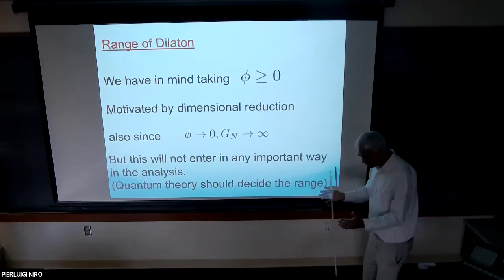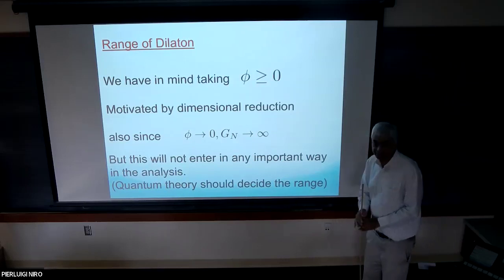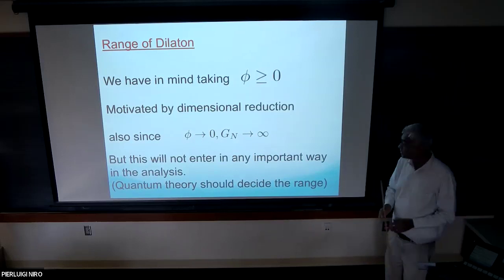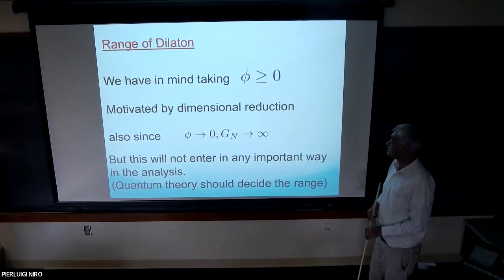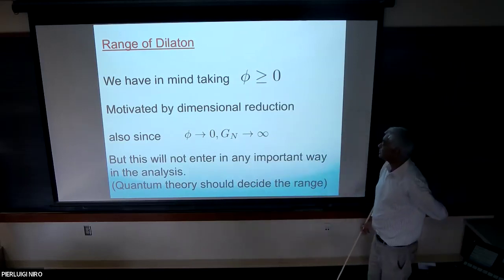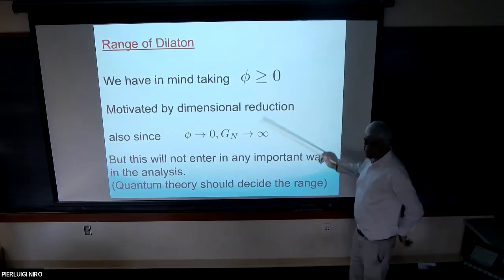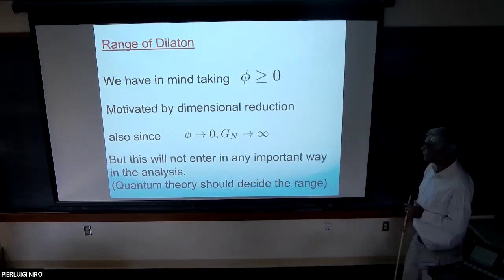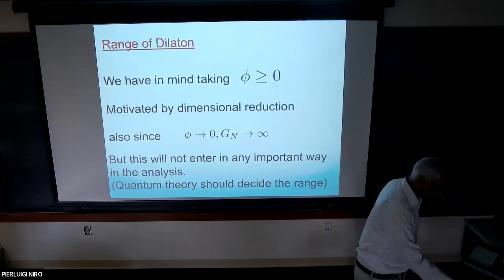When you do the dimensional reduction, this dilaton is related to the area of the two-sphere, and that area can't become less than zero from the four-dimensional point of view. But we've truncated the theory, so we won't impose any condition on the dilaton's range — we'll see what the quantum theory tells us. Intuitively, you might think we should take the dilaton to be ≥ 0, which is roughly what we have in mind, but we'll solve the constraints anyway and see what picture emerges.